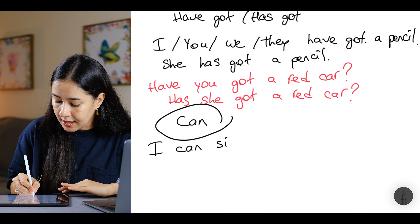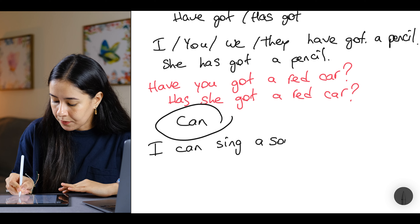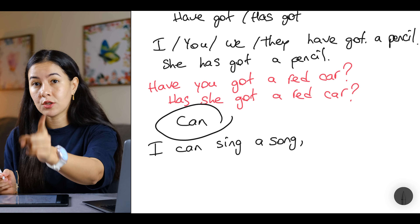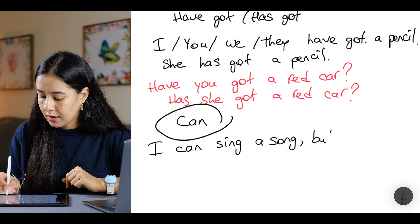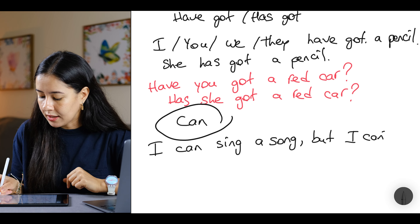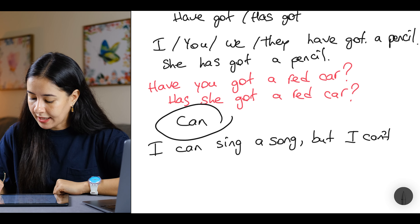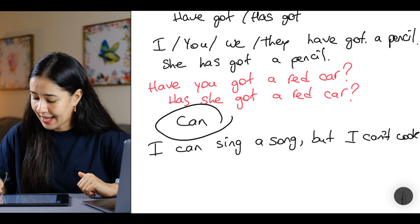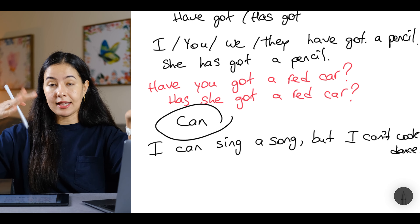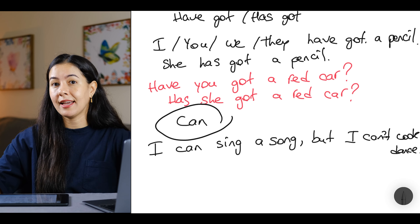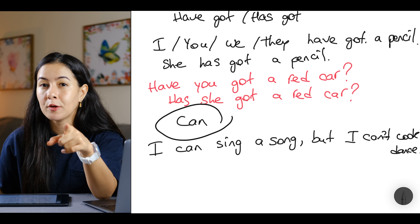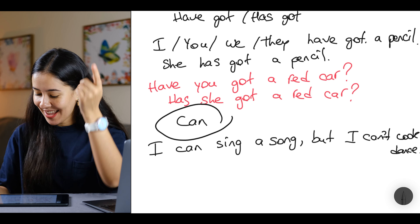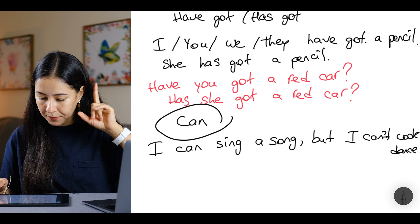I can sing a song. For the negative: I can't — it means I cannot. For example: I can't cook, or I can't dance. So: I can sing a song, but I can't dance. And for a question: Can you dance? So this is about 'can'.